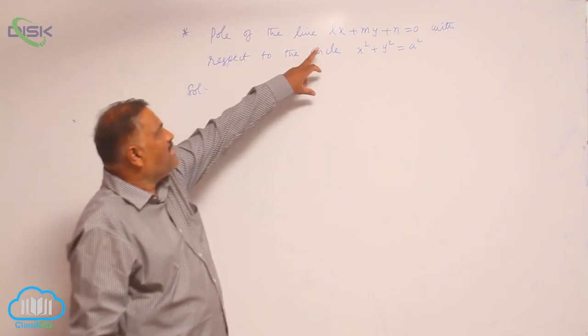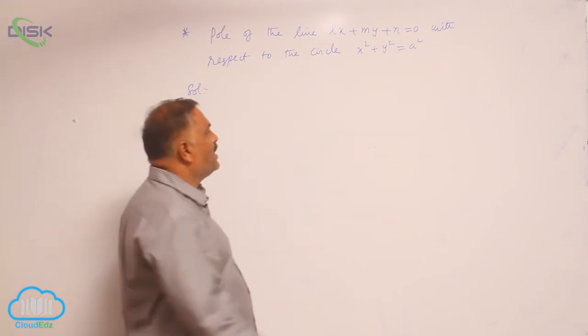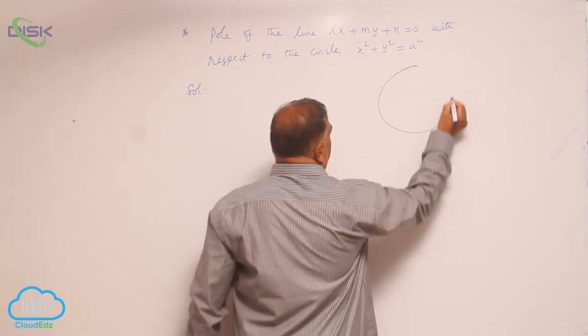We will discuss the pole of the line Lx + my + n = 0 with respect to the circle x² + y² = a².